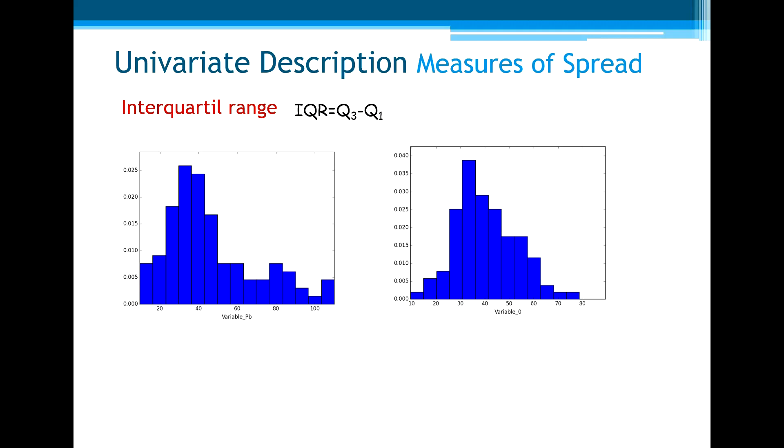Now let's see another measure of spread: interquartile range. Interquartile range is the difference between the third quartile and the first quartile. Let's consider the two distributions here, the two histograms here.